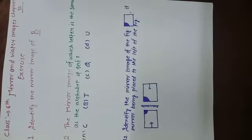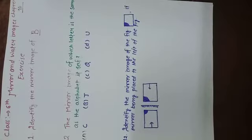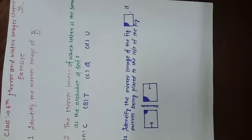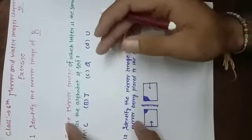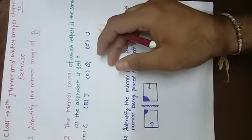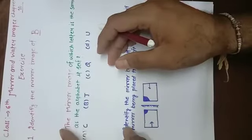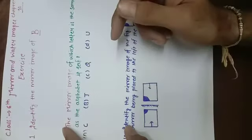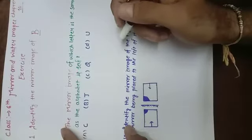Hello everyone, today we are going to discuss chapter number 10 of class 6, that is Mirror and Water Image. This is a quite easy chapter if you know the concept of water and mirror image. In this chapter, any kind of figure — maybe alphabets, maybe numbers — anything can be given, and they will ask what will be the water image or mirror image of that particular figure.